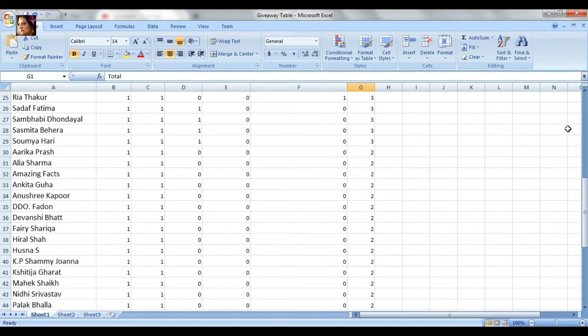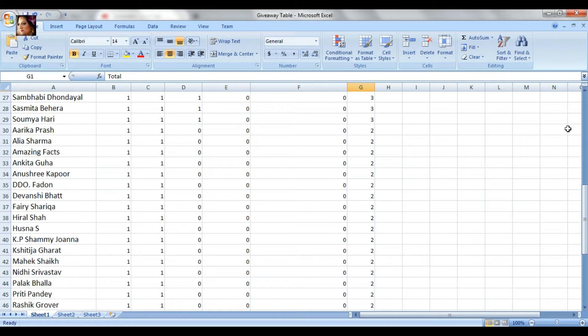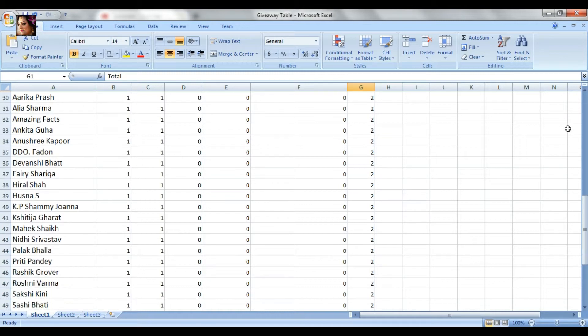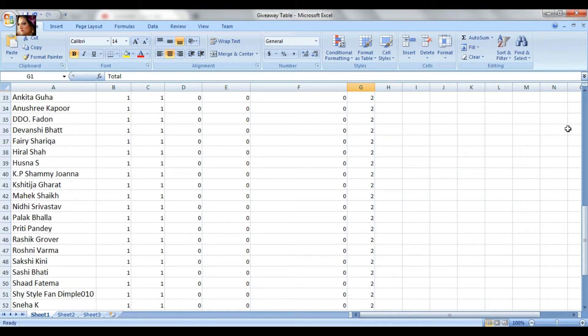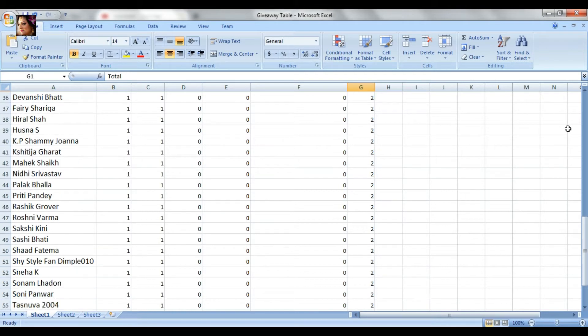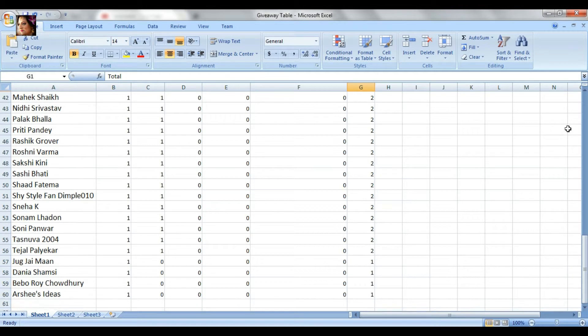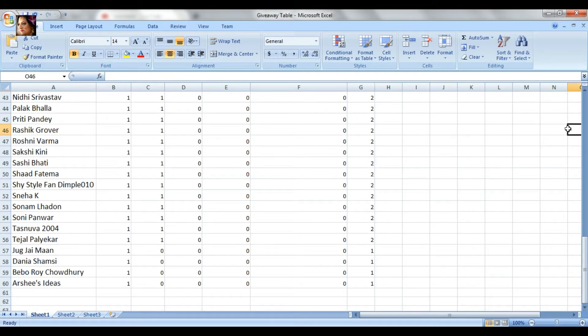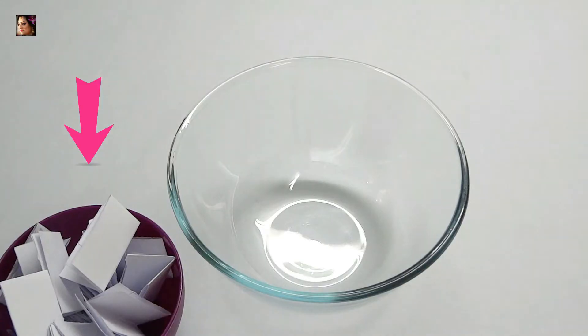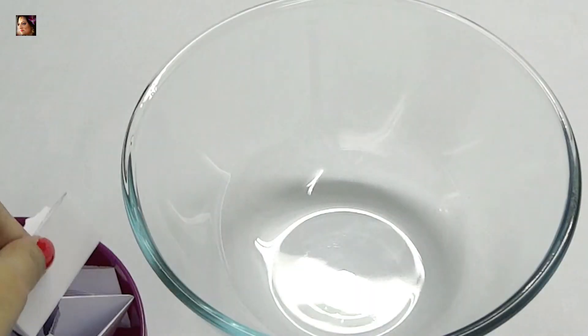Okay, so as I said, I am choosing those only who have subscribed to my channel, commented below the giveaway video and followed me either on Instagram or on Twitter other than Facebook. And I have got 28 participants who have matched this criteria and I have printed their names in this kind of chits.